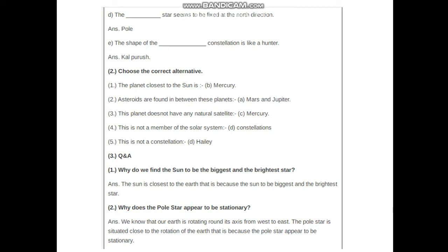The shape of the blank, in the blank we have to fill: Orion constellation is like a hunter. Choose the correct alternative: The planet closest to the sun is Mercury. Asteroids are found between these planets: Mars and Jupiter. This planet does not have any natural satellite: Mercury. This is not a member of the solar system: constellation. This is not a constellation: Halley.